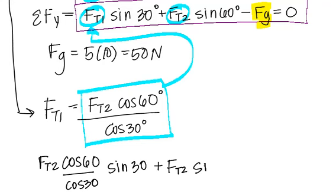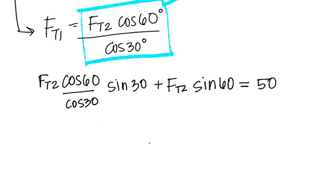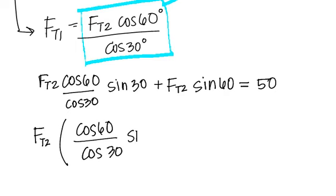Plus FT2 sine 60. Can I go ahead and add Fg to both sides? And it was 50 from earlier. So now I have just one unknown. Can I factor out an FT2? So I'm left with cosine of 60 over the cosine of 30 times the sine of 30 plus the sine of 60 because I factored out FT1 and that will equal 50.